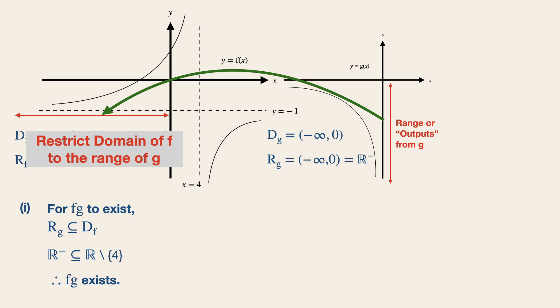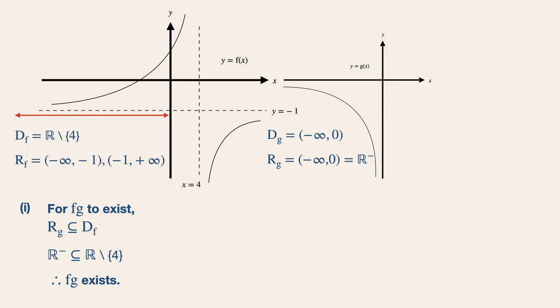Because that's the condition for a composite function to exist, we use this information, where the range can be determined from the graph of f using the new domain. So the range of fg is from negative one to this point over here, which will be three over four.